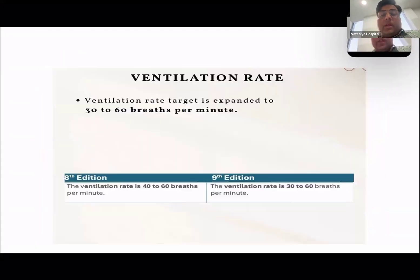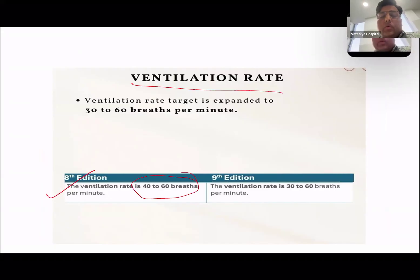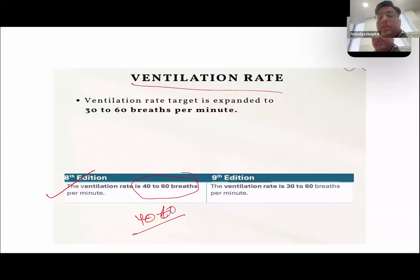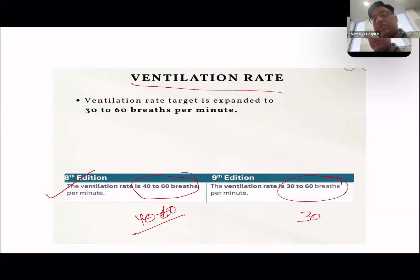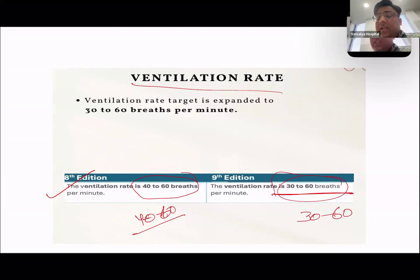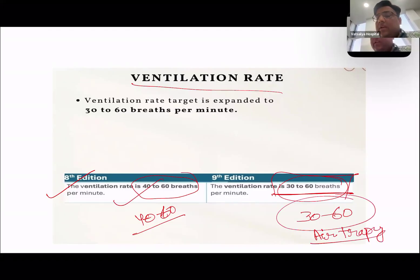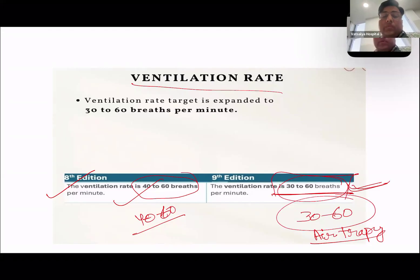Next, ventilation rate has been changed. Previously the range was 40 to 60 breaths per minute, which matches the normal respiratory rate of a newborn. In the newer ninth edition, they have changed the ventilation rate to 30 to 60 breaths per minute. Studies found that at 30 to 60 breaths per minute effective ventilation can be established with reduced risk of air trapping. Over-ventilating at higher rates increases air trapping risk. The lower rate also mimics natural newborn respiration and aligns with the 30 breaths per minute given during chest compressions.